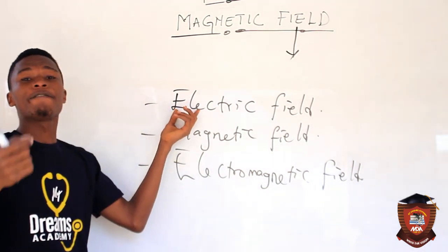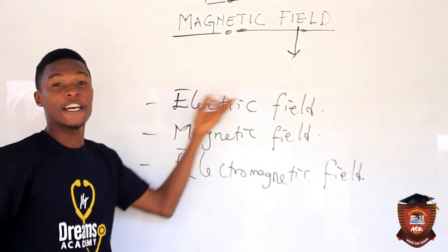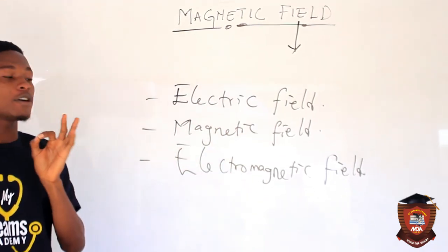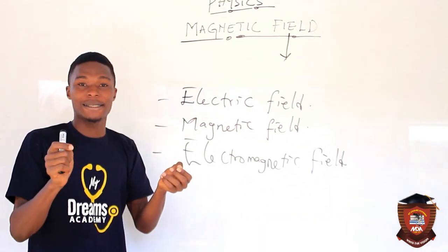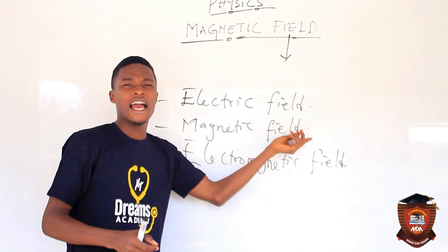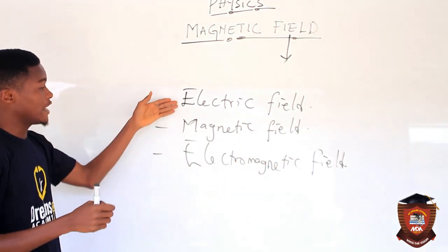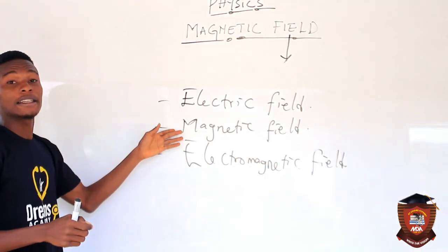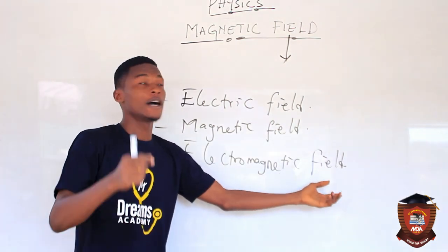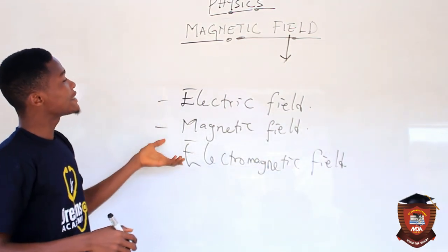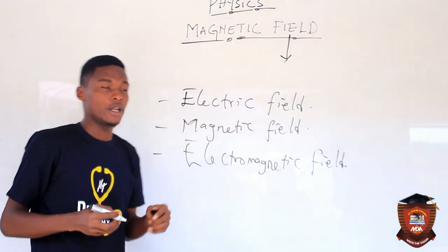Anywhere I can feel the influence of electricity is called an electric field. Anywhere I can feel the influence of magnetism is called a magnetic field. And anywhere I can feel the joint influence of electric field and magnetic field, we call it an electromagnetic field. With that said, let's go into magnetic field properly.